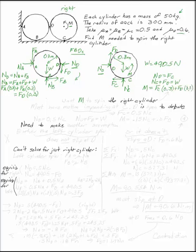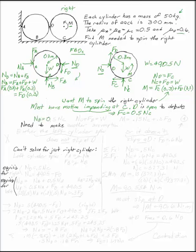To find what M it takes to spin the right cylinder, I must have impending motion at C — there's no other choice. Motion impending at C means Fc = μs × Nc = 0.5 Nc. Plugging that into the equilibrium equations for the right-hand disk: Nd = 0.5 Nc; Nc + Fd = 490.5; and the moment gives M = 0.15 Nc + 0.3 Fd. But I have four unknowns — Nd, Nc, Fd, and M — and only three equations. I need to make another assumption.